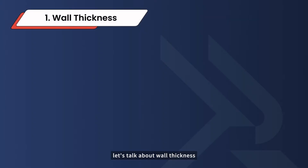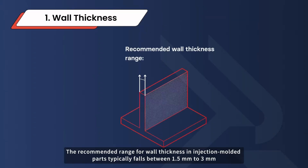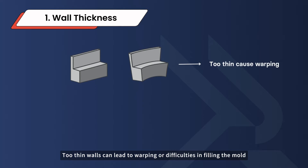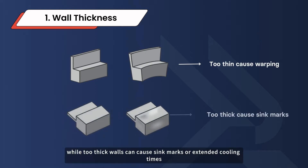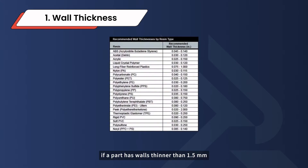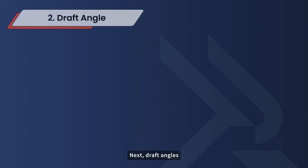First up, let's talk about wall thickness. The recommended range for wall thickness in injection molded parts typically falls between 1.5 millimeters to 3 millimeters. Too thin walls can lead to warping or difficulties in filling the mold, while too thick walls can cause sink marks or extended cooling times. Designers should consider the recommended wall thickness for different materials to achieve optimal results.